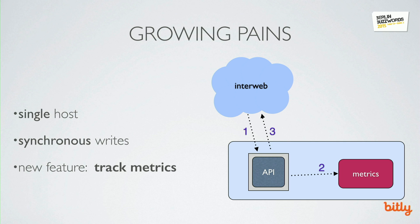We're starting to see that this current setup has a tight coupling problem. If we continue to build additions to this system in the same way, we'll end up with a real mess of interconnected components. One way to resolve all of these issues is to perform the work of writing into our metric system asynchronously — place our data in some sort of queue and write into our metric system via some other process that consumes that queue. This decoupling allows the system to be more robust and fault-tolerant. At Bitly, we use NSQ to achieve this.